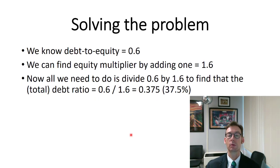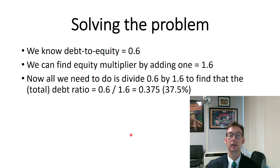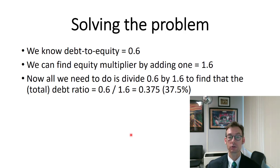Let's go ahead and solve this problem. We've been told the debt to equity ratio is 0.6. To find the equity multiplier, all we have to do is add one to that, giving us 1.6. Taking the debt to equity ratio divided by the equity multiplier gives us the total debt ratio. So we take 0.6 divided by 1.6, which gives us 0.375, or 37.5% of the capital structure being debt.